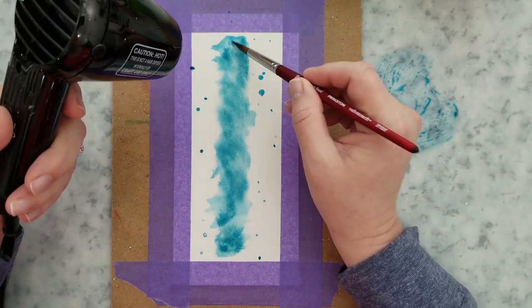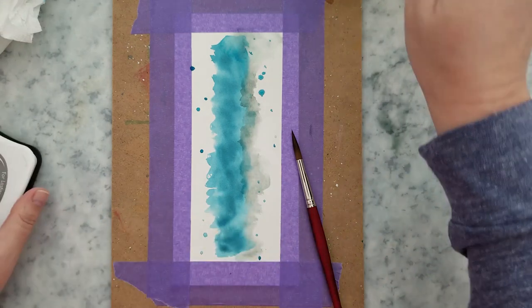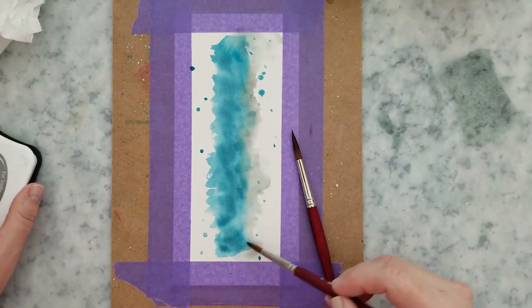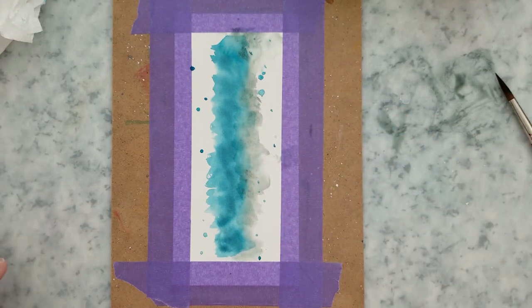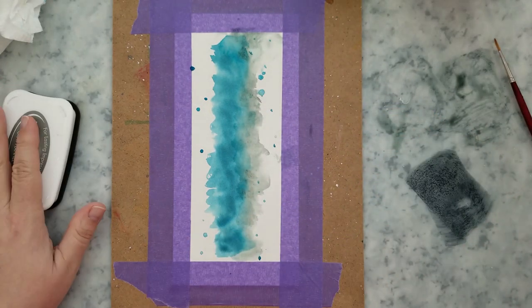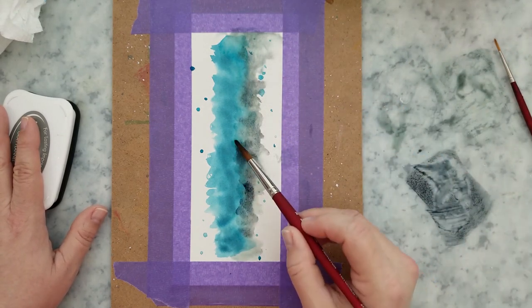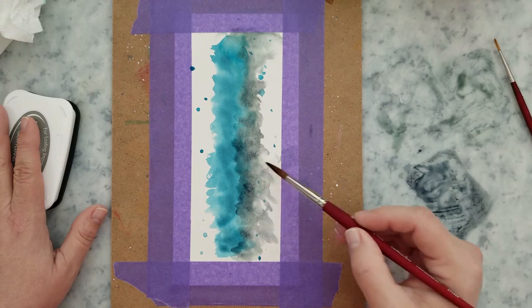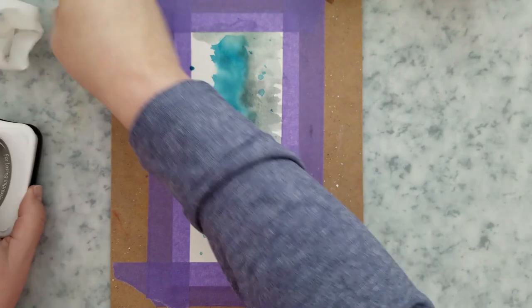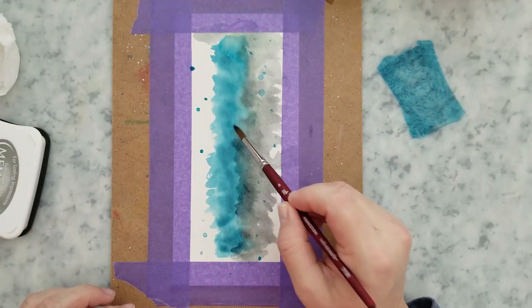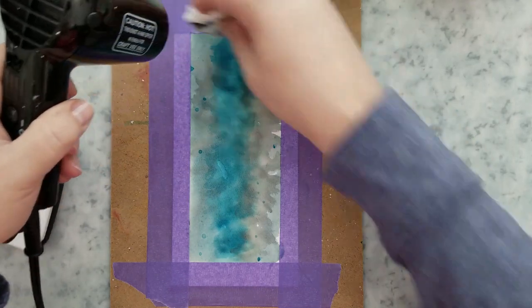And then I'm going to go ahead and dry that because I find by drying in between each layering, it helps build the color a little bit better. So I came in with London fog and it wasn't quite dark enough for what I was looking for. So I'm actually end up using gray flannel. And again, I'm doing the same thing going around the edges of the Teal Zeal, laying down clean water, working that gray flannel ink all around, and even coming back in with more Teal Zeal to blend those together a little bit.